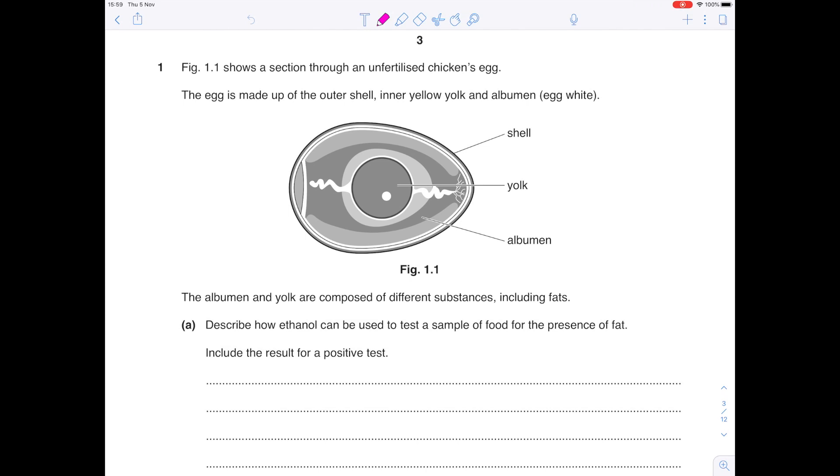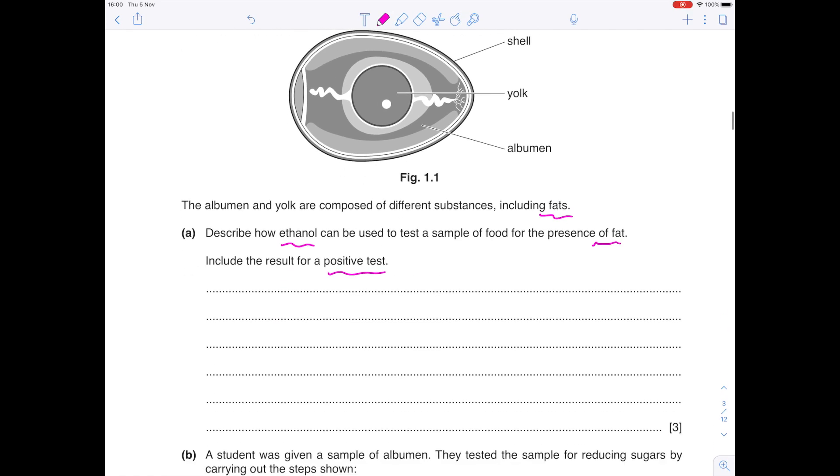Question 1. Figure 1.1 shows a section through an unfertilised chicken's egg. The egg is made up of the outer shell, inner yellow yolk and albumin. The albumin and yolk are composed of different substances including fats. Describe how ethanol can be used to test a sample of food for the presence of fat, provide the result for the positive test, and it's worth 3 marks. If we're looking at fat and it involves ethanol, then it must be the ethanol emulsion test.